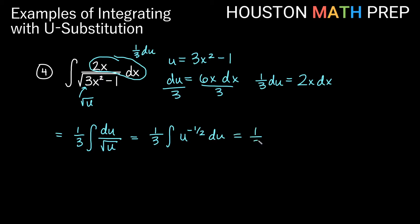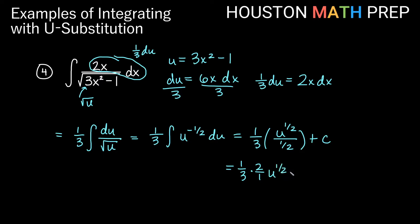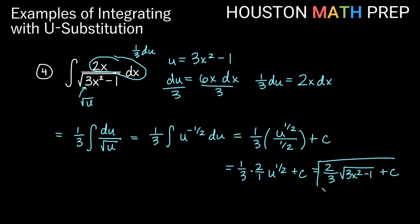Using the power rule, the power goes up by one, giving u to the 1/2, then divide by the new power 1/2, plus C. Dividing by 1/2 is the same as multiplying by 2, so we get 1/3 times 2, which is 2/3. Then u to the 1/2 is the square root of u. Replacing our u, which was 3x squared minus one, the final answer is 2/3 times the square root of 3x squared minus one, plus C.